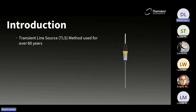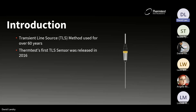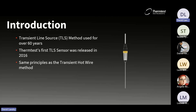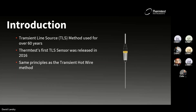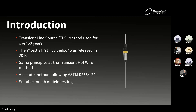The transient line source method has been in use for over 60 years. ThermTest's TLS probe was developed and released in 2016, along with its handheld source component. The method uses the same principles as the transient hotwire method. The update came in 2022. This is an absolute method requiring absolutely no calibration — in fact, it's required to be that way. Because of the rugged sensor design, this method is suitable for lab or field testing.